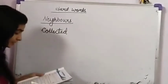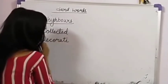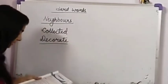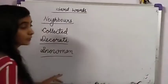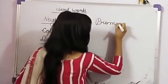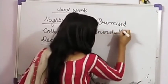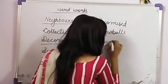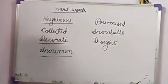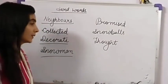Next is 'decorate.' We can also take 'snowman' and 'snowballs.' We can also take 'promise.' And you can also take 'thought.' So these are the hard words and the remaining chapter we will cover in our next video. You will have to try to read this chapter and practice these hard words. Thank you.